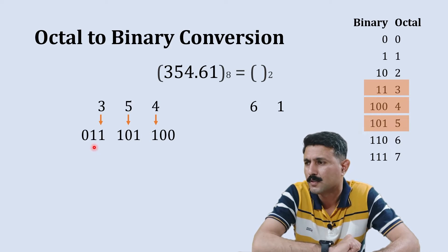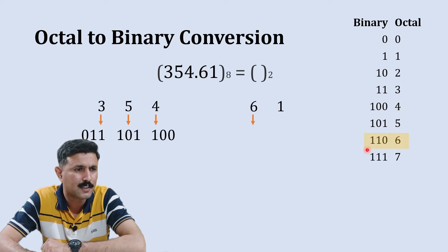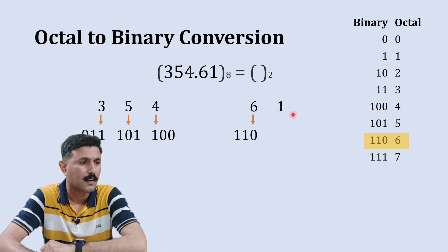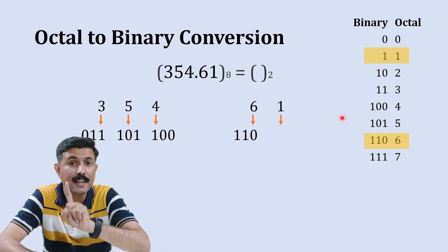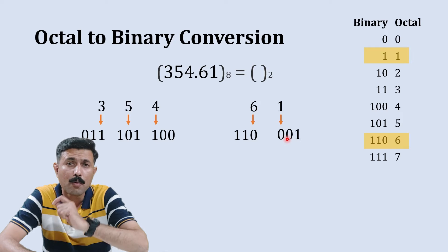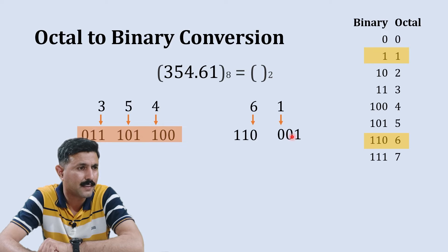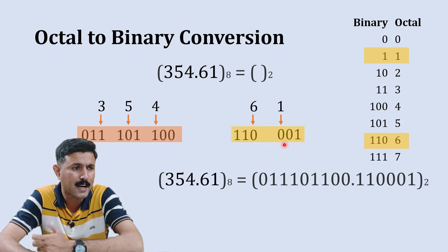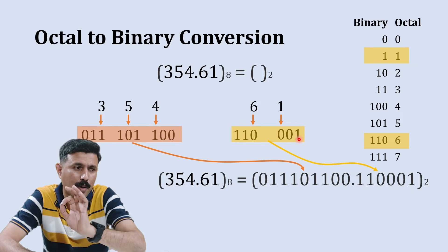The next digit is 3. The binary equivalent to 3 is 11, but we write 011 — always use three digits. Then for the fractional part: 6 has a binary equivalent of 110 — wait, it's 101 — write that here. The next is 1. The binary equivalent to 1 is just 1, but you need to take precaution: do not write 1. Instead, write 001. This combines to give the full answer.